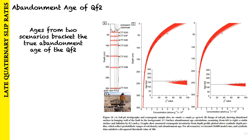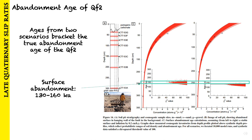They consider two scenarios as shown in Figure 14, and age constraints from both bracket the true abandonment age of QF2. They suggest that 130 to 160 thousand years is a reasonable range of ages for the timing of surface abandonment.